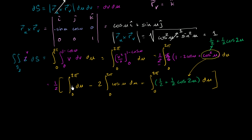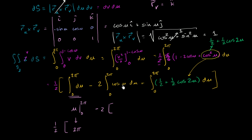Now this is easy to evaluate. The first integral: the antiderivative of 1 is u, evaluated from 0 to 2π, which gives 2π. For the second integral: minus 2 times the antiderivative of cosine u is sine u, evaluated from 0 to 2π. Sine of 2π is 0 and sine of 0 is 0, so this whole term evaluates to 0.